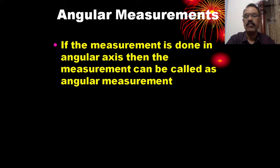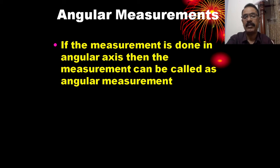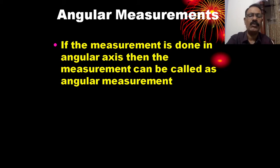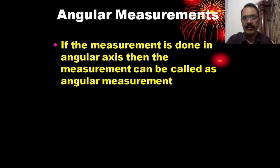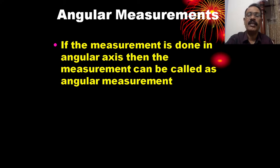Angular measurements: if the measurement is done along an angular axis, then it is called angular measurement. For example, this is a horizontal surface, and angles such as 60 degrees, 120 degrees, and 180 degrees can be measured. These are all examples of angular measurements.